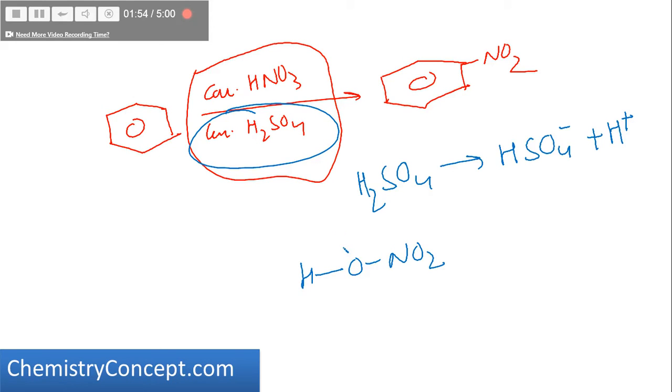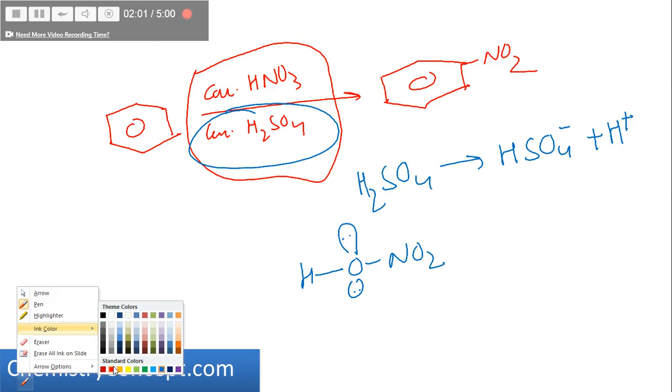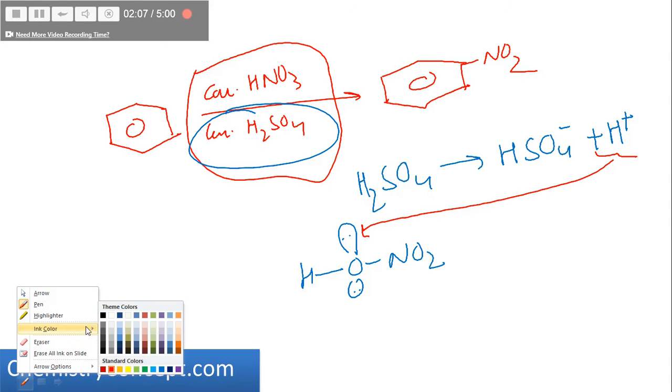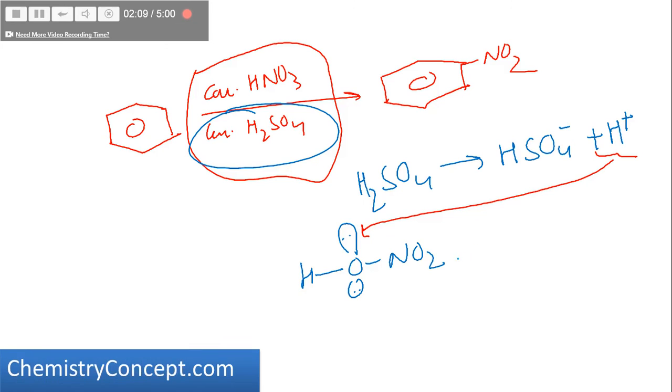Nitric acid, having a lone pair of oxygen, has to accept the proton donated by sulfuric acid to get converted into a protonated nitric acid compound.